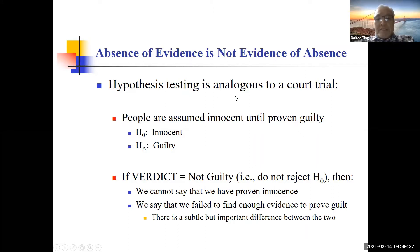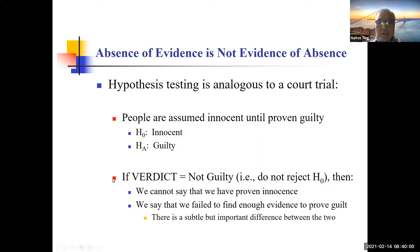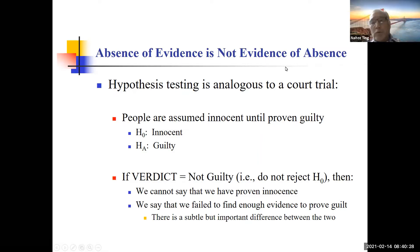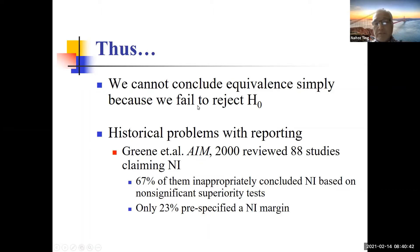As Scott put it, hypothesis testing is analogous to a criminal trial: people are assumed innocent until proven guilty. The null hypothesis is innocence, and you must collect enough evidence to show guilt. If the verdict is 'not guilty,' we cannot say we have proven innocence — we say we failed to find enough evidence to prove guilt. Absence of evidence is not evidence of absence. This is a critical distinction in statistical hypothesis testing.